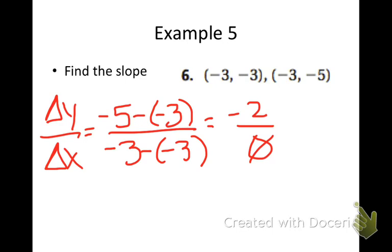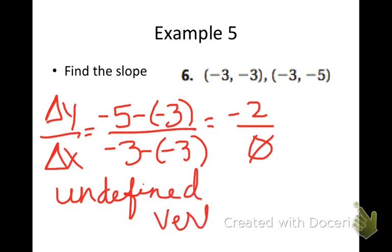Know that we cannot divide by 0 in mathematics. So that is undefined. And that is the slope of a vertical line. It is undefined because we cannot divide by 0.